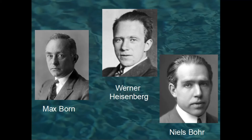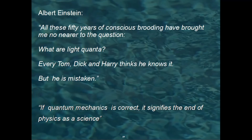For Einstein, who conceived physical reality according to common sense, quantum physics was always unacceptable because he realized that it was in no way compatible with his realist view. In fact, he wrote: 'All these fifty years of conscious brooding have brought me no nearer to the question. What are light quanta? Every Tom, Dick and Harry thinks he knows it. But he is mistaken. If quantum mechanics is correct, it signifies the end of physics as a science.' Einstein always firmly opposed the idea that reality exists only in the moment of observation. For him, reality had to exist with all its properties even before observation, and therefore quantum mechanics was an incomplete theory that did not correctly represent natural laws.